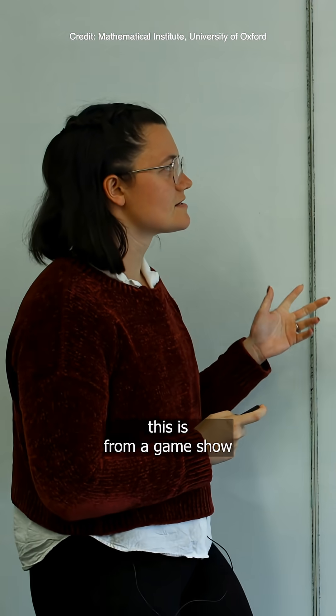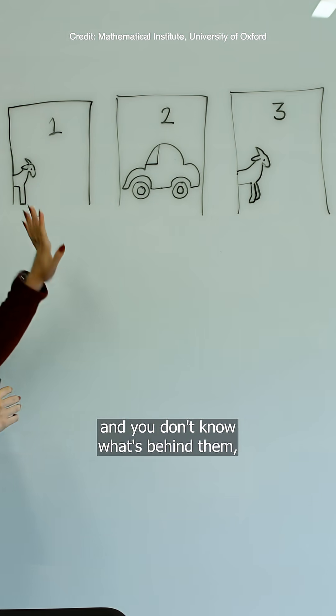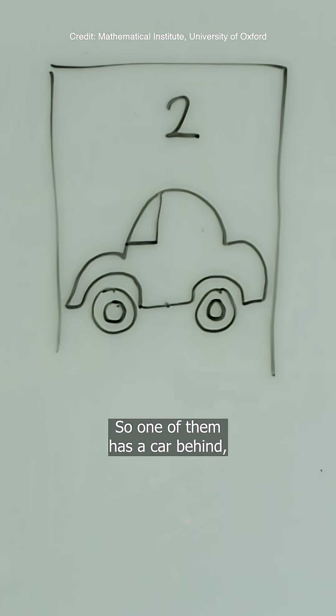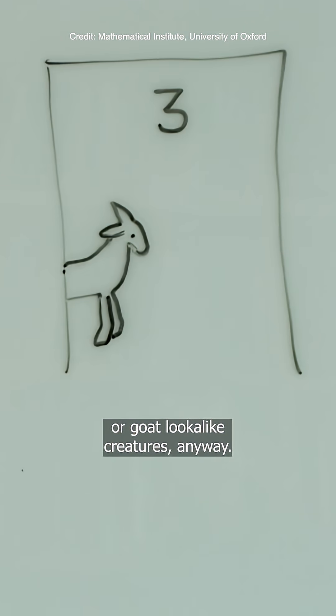To introduce this, it's from a game show where essentially there are three doors and you don't know what's behind them. You're trying to win a car. One of them has a car behind it and two of them have goats.